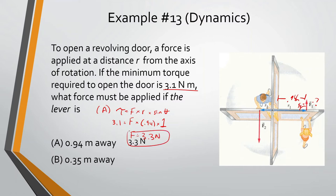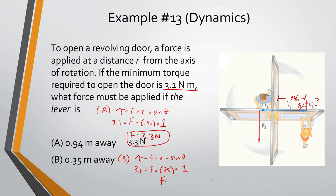When we're closer at 0.35 meters, we should know this is going to be harder — we need more force the closer we are to the axis. Part B: torque equals force times radius times sine of theta. We need 3.1 newton-meters to rotate the door, and we're 0.35 meters away, pushing perpendicularly — so sine of 90 is 1. 3.1 divided by 0.35 gives us 8.86 newtons.